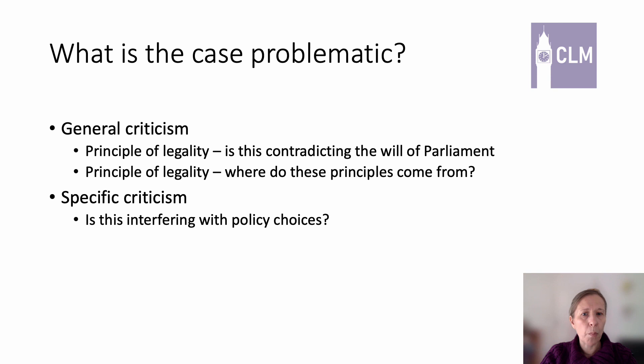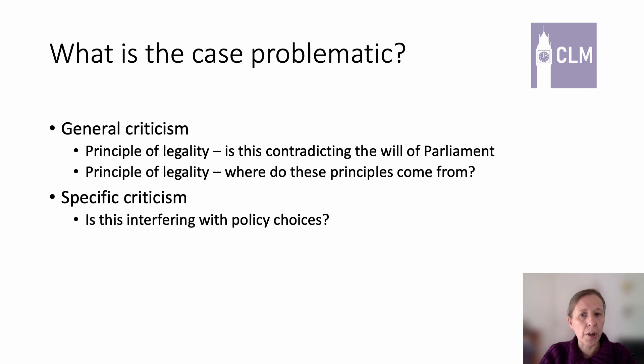This brings us to a second concern — where do these fundamental principles of the common law actually come from? The argument in favour says they come from common law case law, have been around for a very long time, evolve slowly over time building on past cases, and so it's relatively easy to find them and know what they are. But critics of the principle of legality say you can't give a complete coherent list — this creates legal uncertainty. How do we know when the courts will say something is a fundamental principle of the common law? It might be hard to predict, and that might undermine the rule of law in a different way.